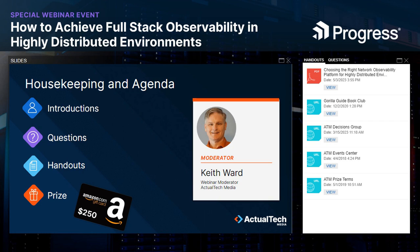Next to the Q&A tab is the Handouts tab, which has a number of important resources. I'd especially like to call your attention to the free PDF from Progress Software with more information about today's topics. The handout section also has links to the Guerrilla Guide Book Club, the Actual Tech Media library, and the ATM Events Center. At the end of this session, we'll be awarding a $250 Amazon gift card to one lucky registrant who is present for the entire live event.